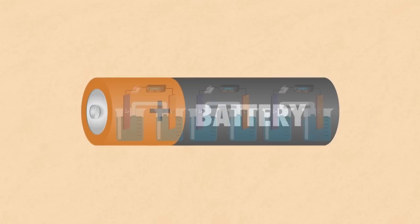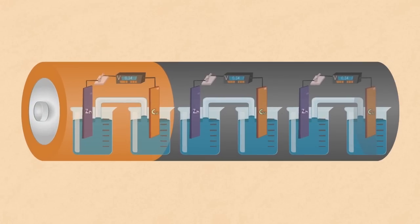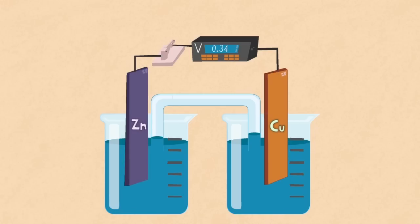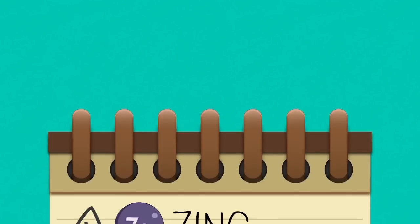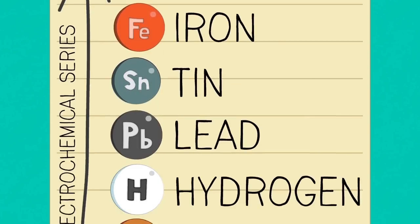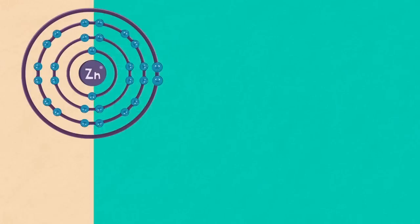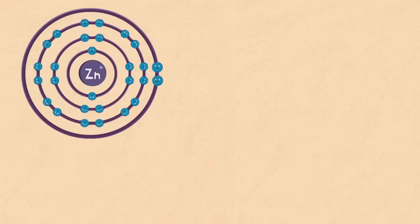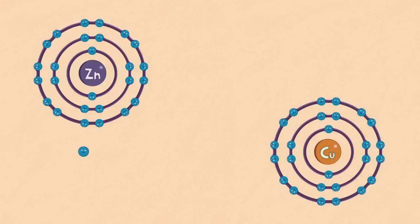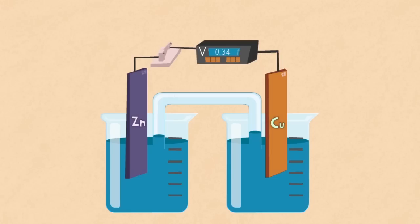The two metals connected in this way cause an electric current. This is because zinc is higher up in the electrochemical series than copper. This means that zinc can push away its electrons more strongly than copper can. As a result, electrons flow along the wire and through the voltmeter from the zinc to the copper.